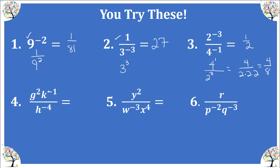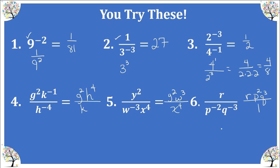Number 4 has only variables, so we move factors to make them happy. G squared is positive and stays. K to the negative 1 is negative and moves down to the denominator. H to the negative 4 is in the denominator and moves upstairs to become positive. Number 5: y squared is happy and stays. W to the negative 3 is in the denominator, wants to come upstairs. X to the 4 is in the denominator and prefers to stay there. Number 6: R stays where it is. P to the negative 2 and Q to the negative 3 are both in the denominator and come upstairs. We don't need the 1 in the denominator — simplify as much as you can. This is the preferred answer.